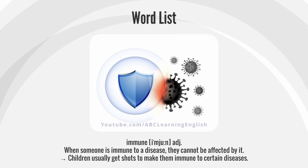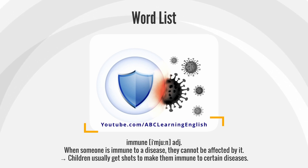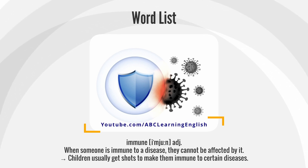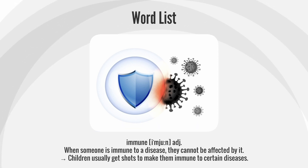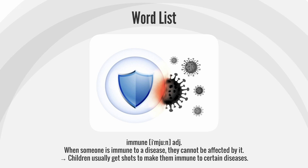Immune. When someone is immune to a disease, they cannot be affected by it. Children usually get shots to make them immune to certain diseases.